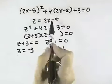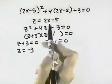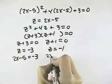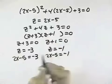But I'm not solving for z, I'm solving for x. I see that z is equal to 2x minus 5, so I can set that equal to negative 3 and set 2x minus 5 equal to negative 1.